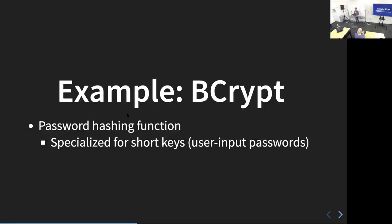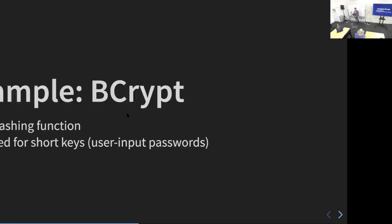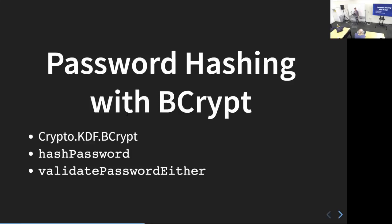You'd use bcrypt if you have a web application and need to hash a user's password so your application can't read it plaintext, but when a user logs in again you can hash their data and compare it against what you have in the database. Very commonly used, very important cryptographic function. The way you do it with Kryptonite is you go to the `Crypto.KDF.BCrypt` module and there are only two functions: `hashPassword`, which hashes the password, and `validatePasswordEither`, which checks the input at login against the stored hash.